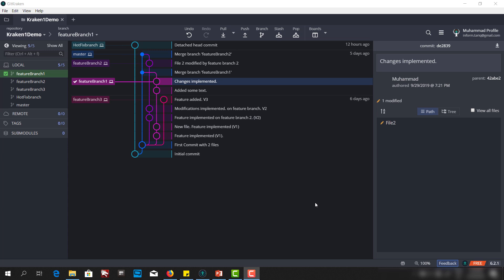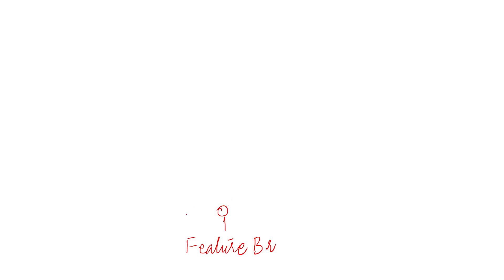Let's first understand what is detached head state. Suppose we have a feature branch and we are making commits. When we make a commit, we have a HEAD that points to the latest commit on the branch. If we make another commit, this HEAD will move to the latest commit.